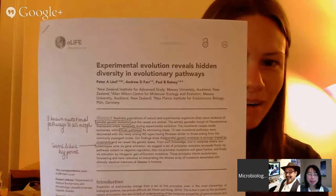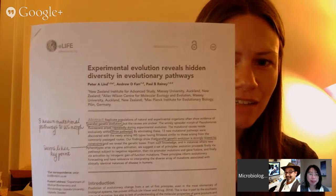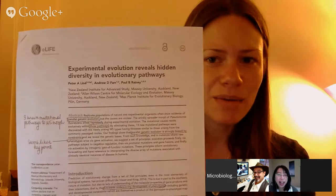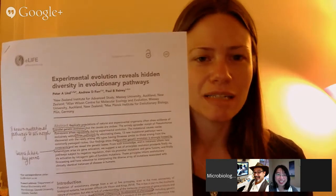We're here with our monthly Google Plus Microbiology Journal Club Hangout. Today we'll be talking about an excellent paper that appeared recently in eLife from Peter Lind, Andrew Farr, and Paul Rainey. They discuss a great experimental system with Pseudomonas fluorescens, looking at fundamentally important questions about evolutionary pathways and parallel genetic evolution. I'm really excited — they've done an excellent job presenting the big points of their research in an accessible way.